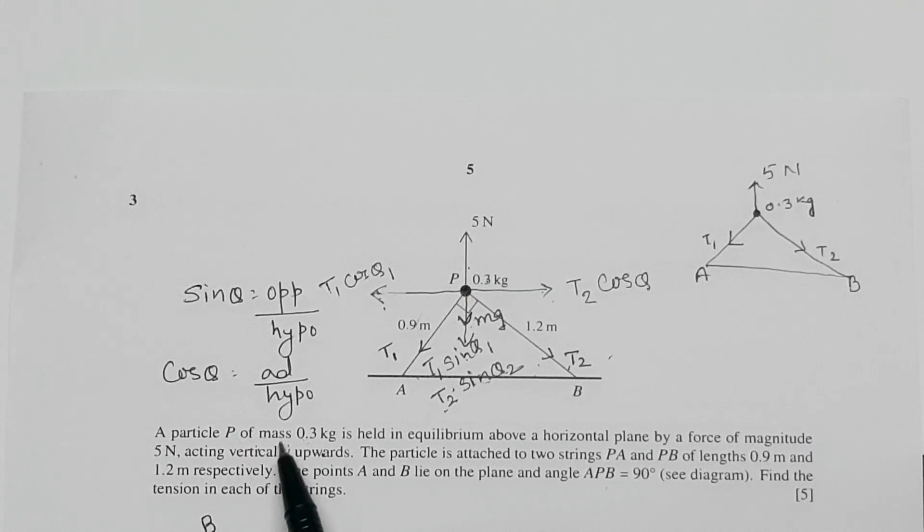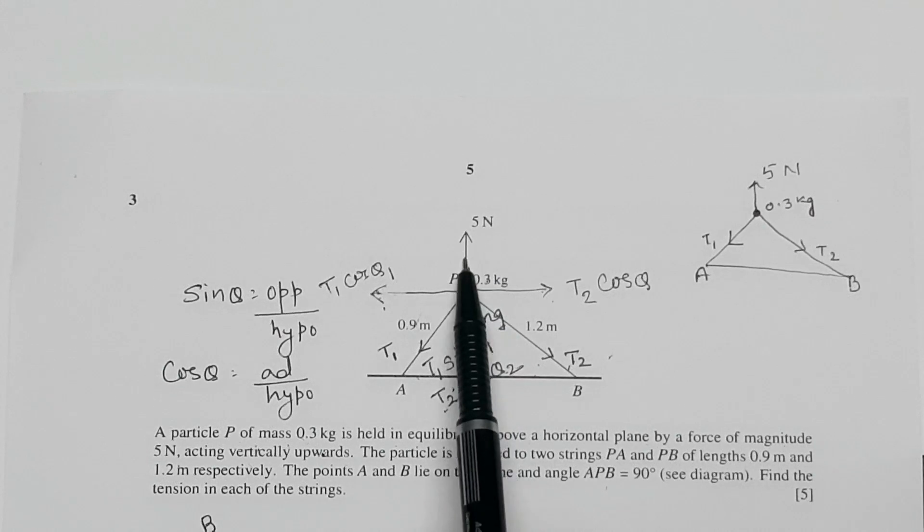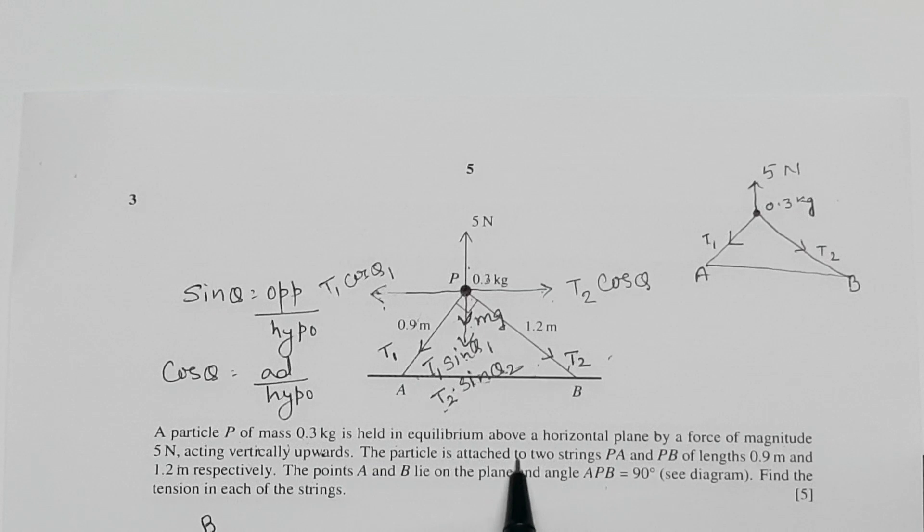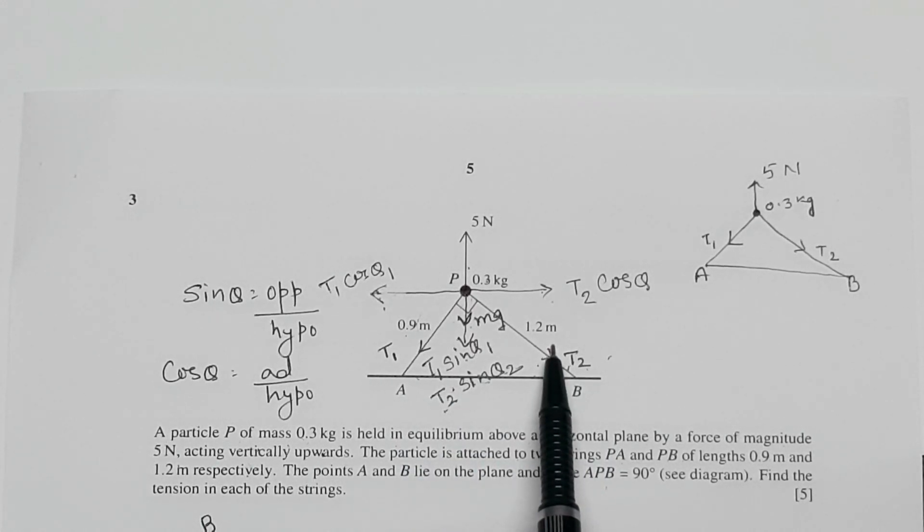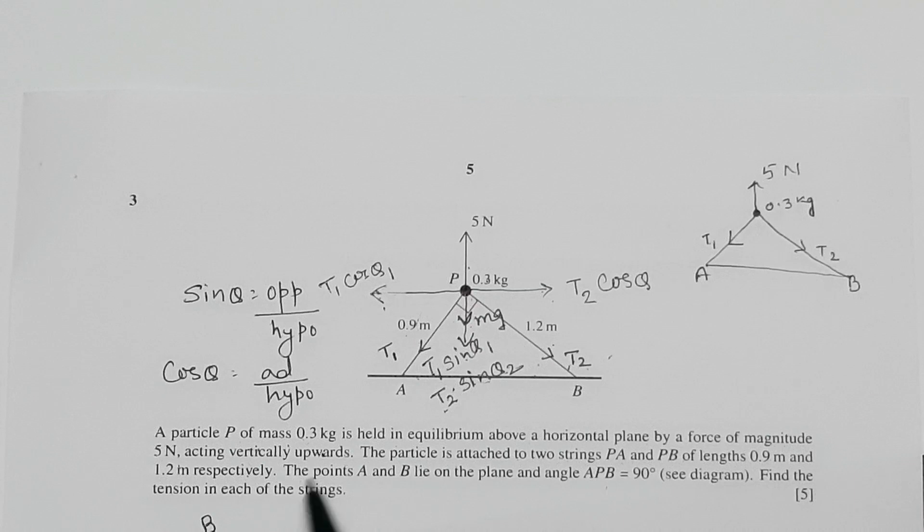The question is a particle P of mass 0.3 kg is held in equilibrium above a horizontal plane by a force of magnitude 5 Newton. So this is 5 Newton force which is held vertically above on the particle. The particle is attached to two strings PA and PB of length 0.9 meter and 1.2 meter respectively. So these are the two strings. The first one is 0.9 meter and the second one is 1.2 meter.